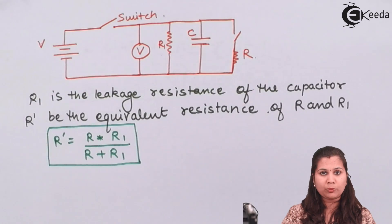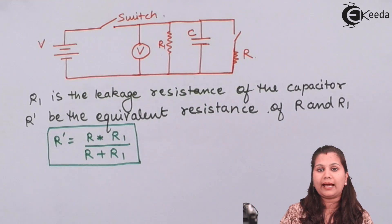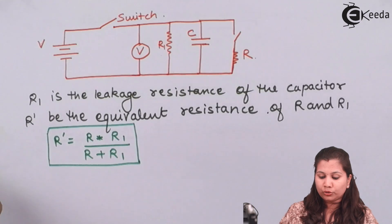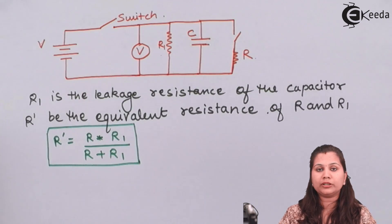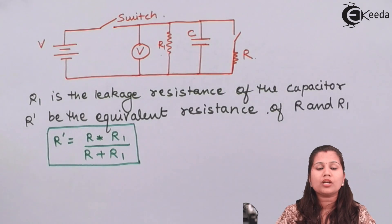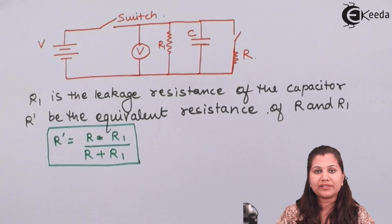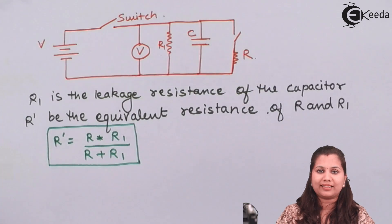The first equation applies when the leakage resistance is not very high and can be neglected. This is the loss of charge method used for measurement of high resistances of the order of 100 kilo ohms or greater than 0.1 mega ohm. I hope the topic — measurement of high resistances using the loss of charge method — is clear to you. Thank you.